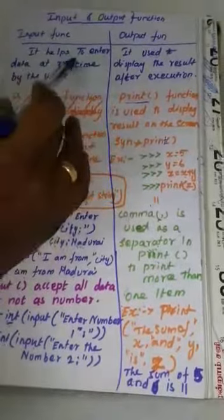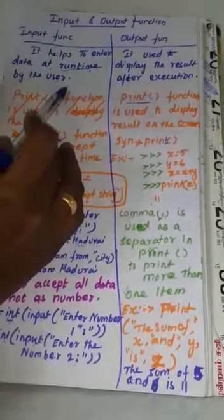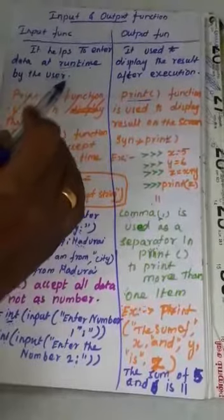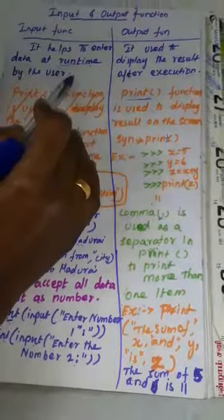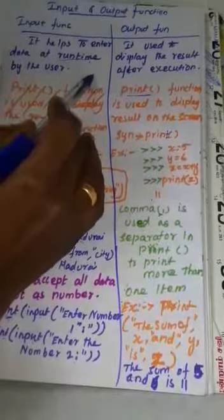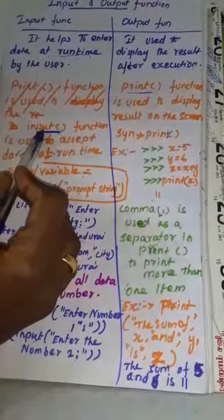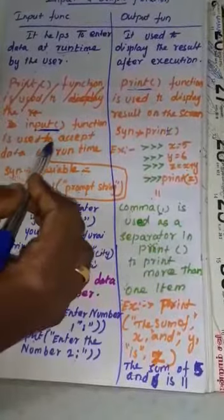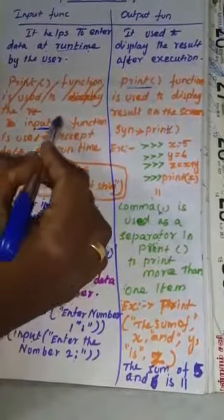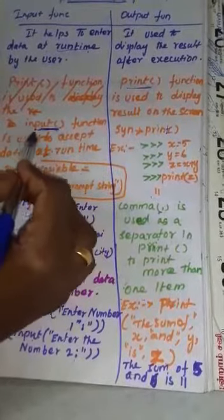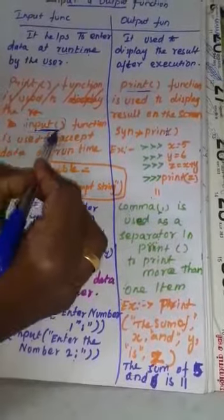Input function helps to enter data at runtime by the user. What is input function? The user can enter the data only at runtime. This is the input function. The input function is used to accept data at runtime. This function, input function, uses what function? Input. This is the function name.